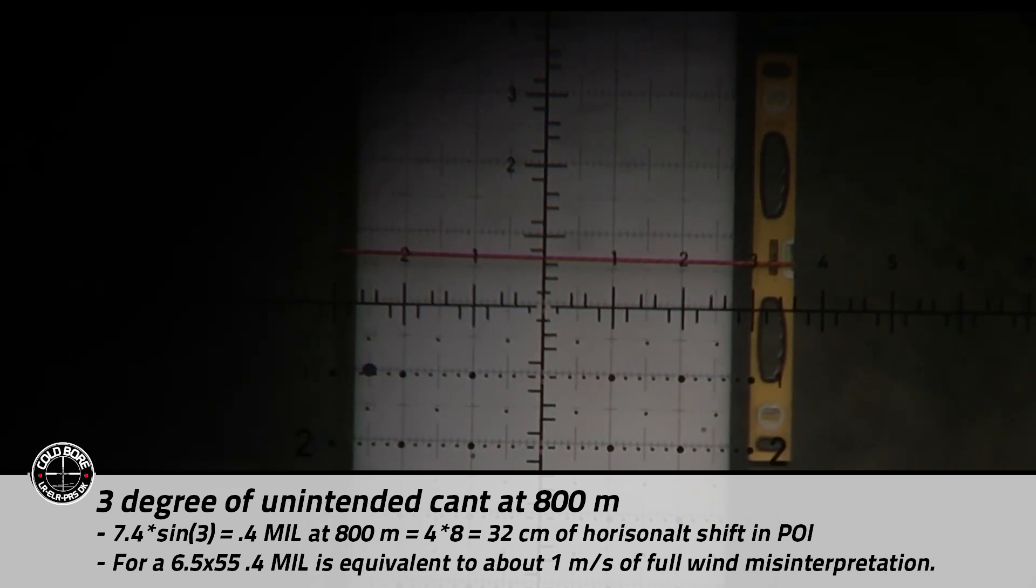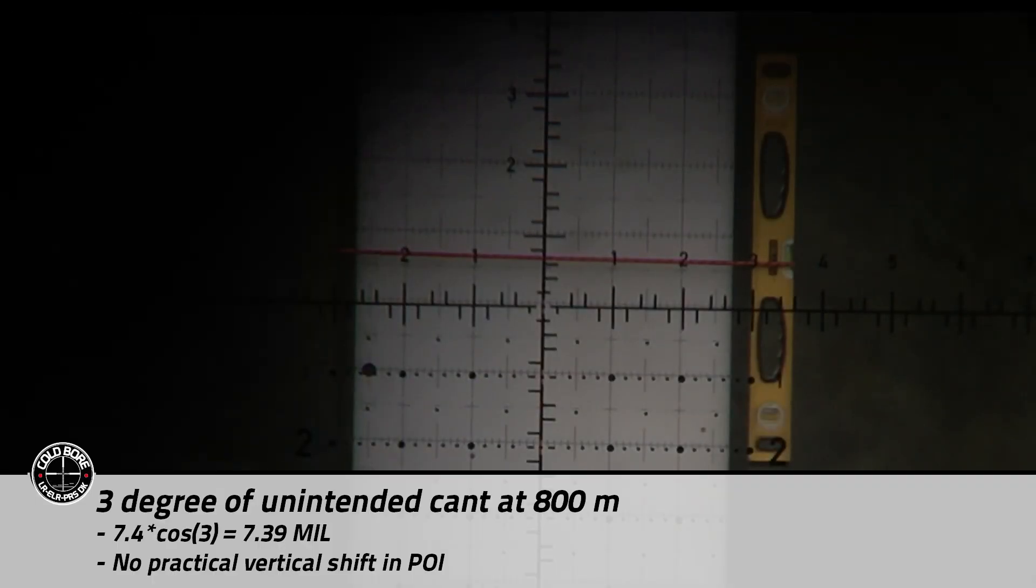Now we can also calculate the vertical shift in the point of impact and luckily as you see here it is a very little shift and has no consequence to the prediction of your point of impact.